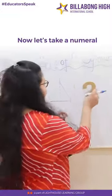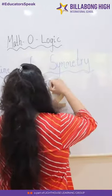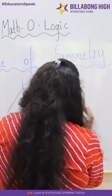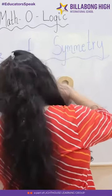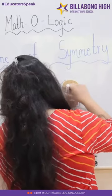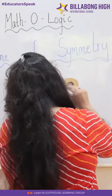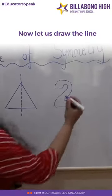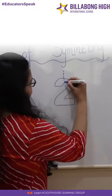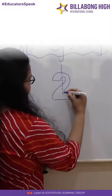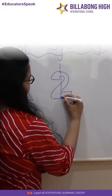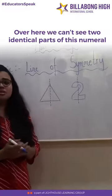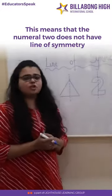Let us take a new model. Let us draw the line. Over here, we can't see identical parts of this numeral. This means that the numeral 2 does not have a line of symmetry.